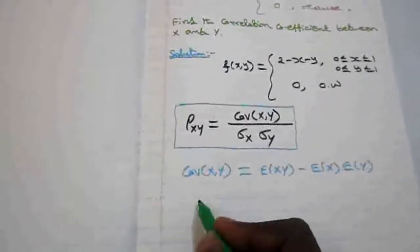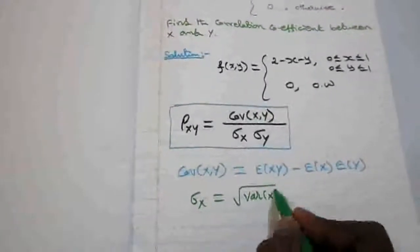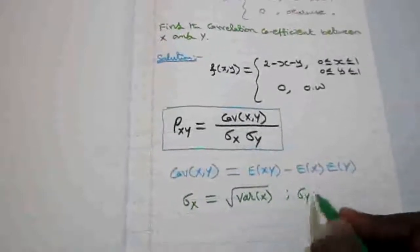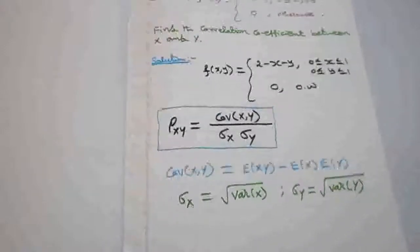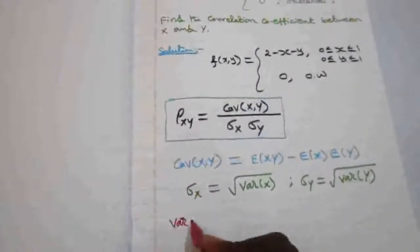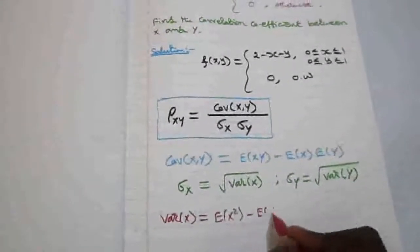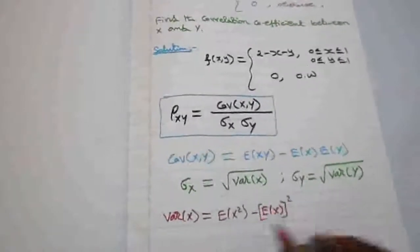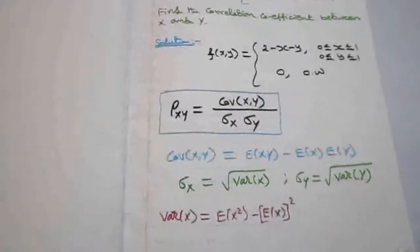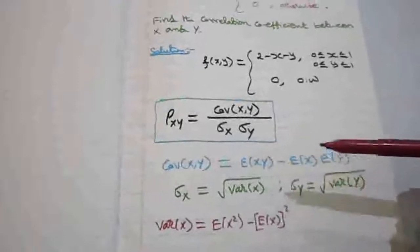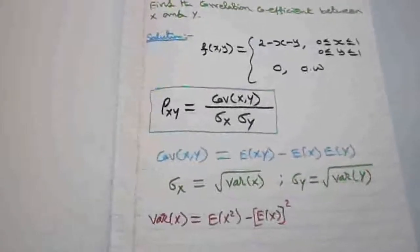Sigma_x is the square root of variance of x, and sigma_y is the square root of variance of y. The variance of x is E(x²) minus [E(x)]², and similarly variance of y is E(y²) minus [E(y)]². To calculate the correlation coefficient, we need to find E(xy), E(x), E(y), E(x²), E(y²), and all related values.